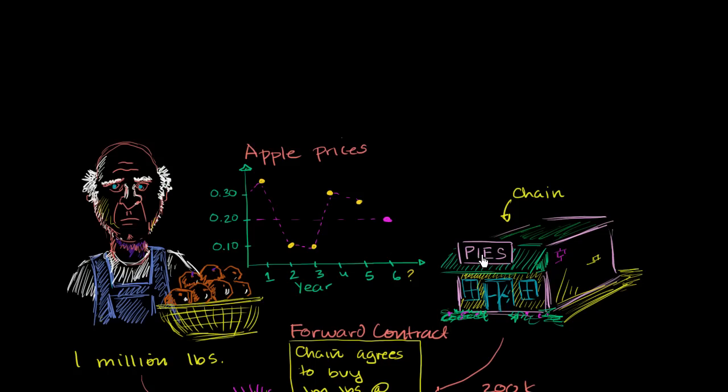After the farmer and the pie chain get involved in this forward contract, a few questions start to pop up in each of their minds. The main one is, what if the other party isn't able to uphold their end of the contract?